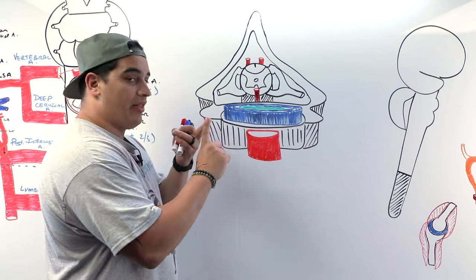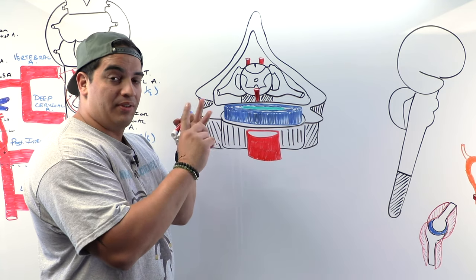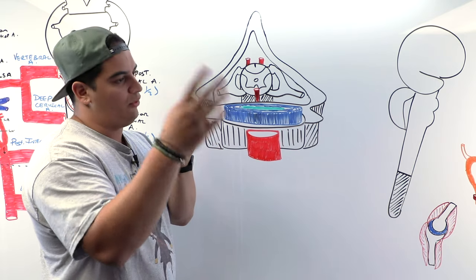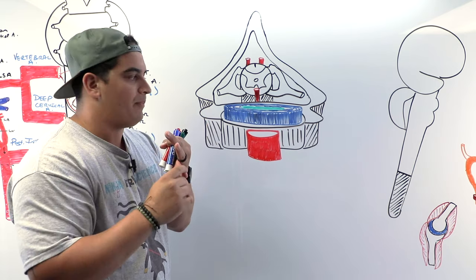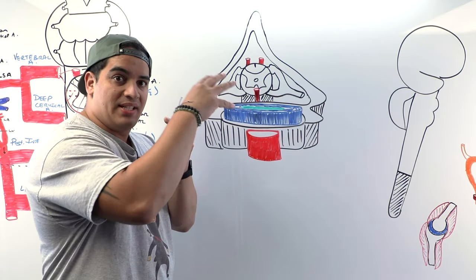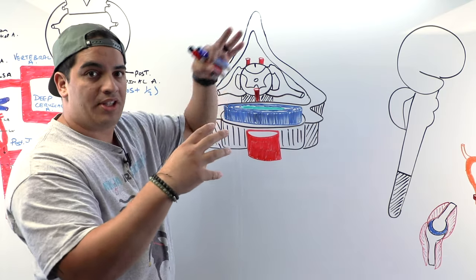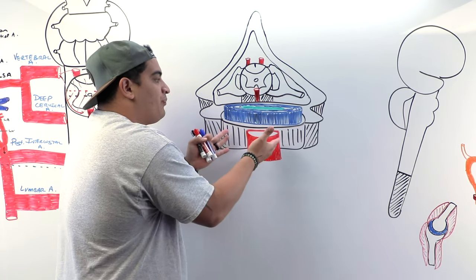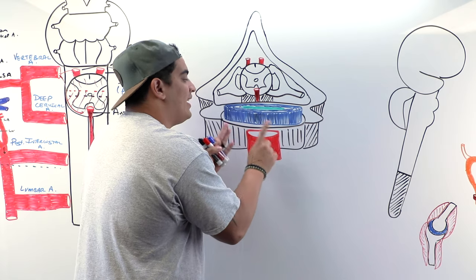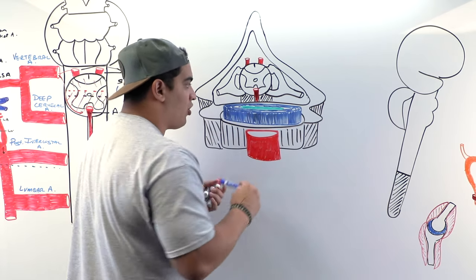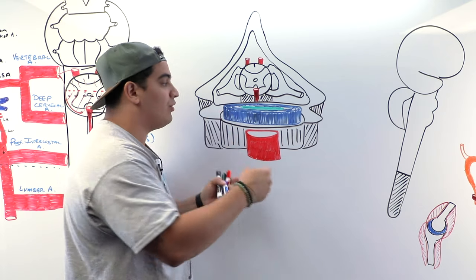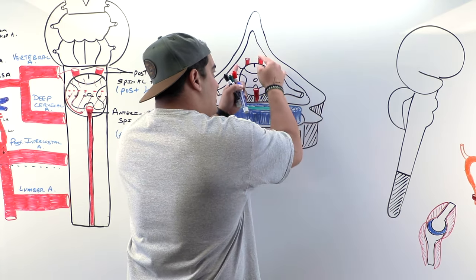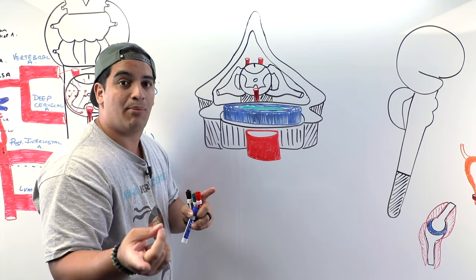To summarize: the vessels are vertebral, deep cervical, posterior intercostal, lumbar, and the lateral sacral artery. We talked about the anterior spinal artery supplying the anterior two-thirds, and the posterior spinal artery supplying the posterior one-third. Now let's talk about how those vessels feed in — we're going to use the posterior intercostal artery as our example and follow that vessel to see how it feeds into the posterior and anterior spinal arteries.